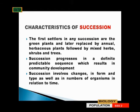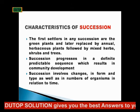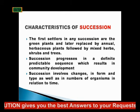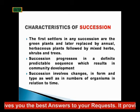Succession progresses in a definite, predictable sequence — one thing leading to the other. We have herbs first, then shrubs, then trees. You have insects first, followed by rodents, then birds, then bigger animals like antelopes. So it is in a progressive form.